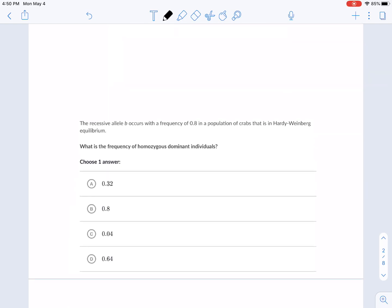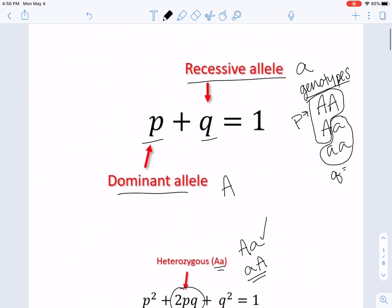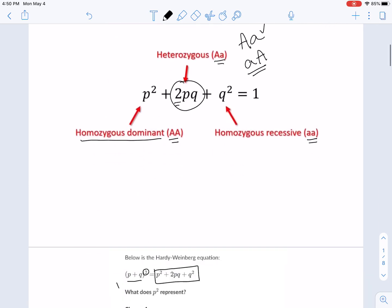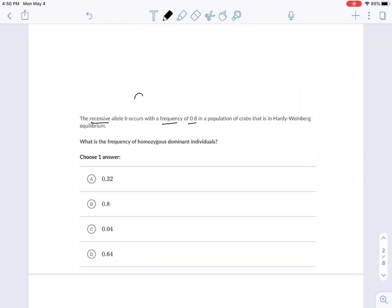So now let's go on and practice some math. This says the recessive allele B occurs with a frequency of 0.8. So the recessive allele has a frequency of 0.8. What does that mean? What letter are we dealing with here? The recessive allele has a frequency of 0.8. That's basically saying that Q is equal to 0.8.